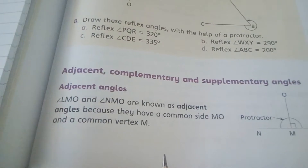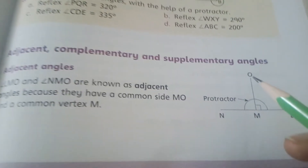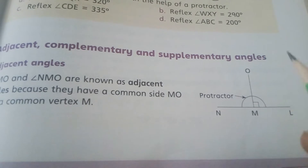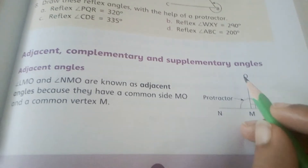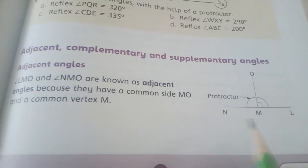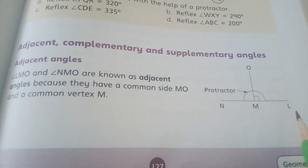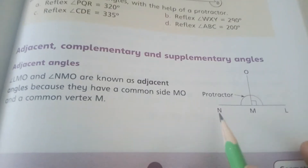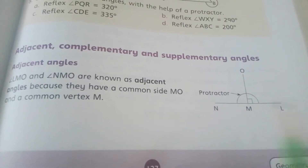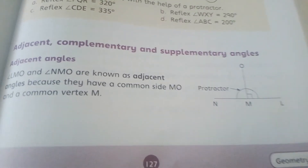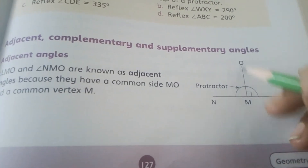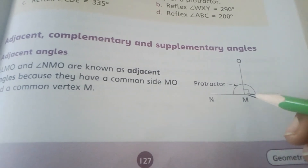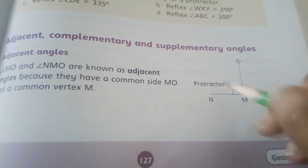You can see examples on page number 127. There is a picture in which we have two angles. The first angle is LMO and the second angle is NMO. So here are two angles, LMO and NMO, and you can see these two angles are called adjacent angles because they have a common arm.